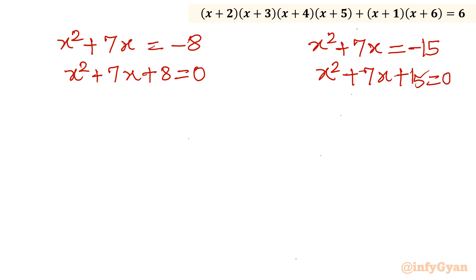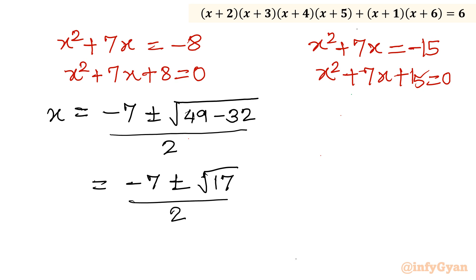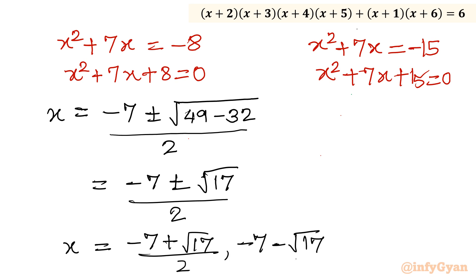Applying the quadratic formula to x² + 7x + 8 = 0: x = (-7 ± √(49 - 32)) / 2 = (-7 ± √17) / 2. So the two real solutions are x = (-7 + √17) / 2 and x = (-7 - √17) / 2.